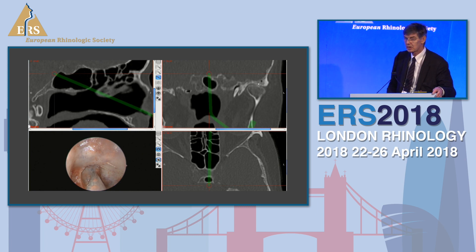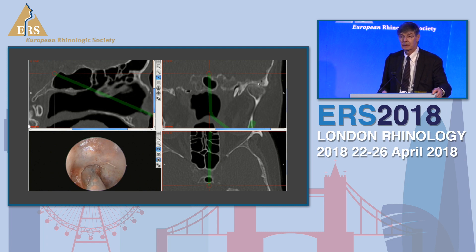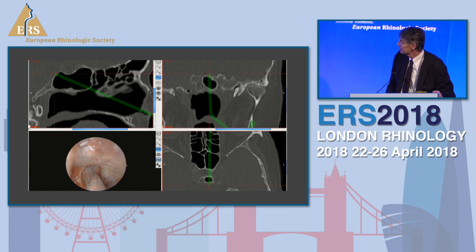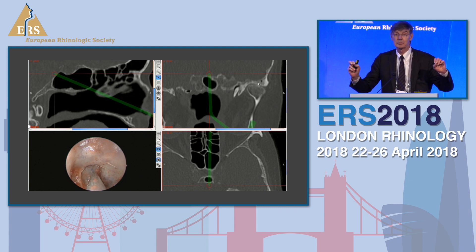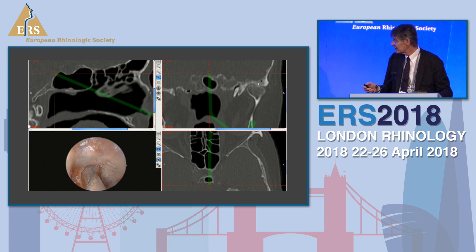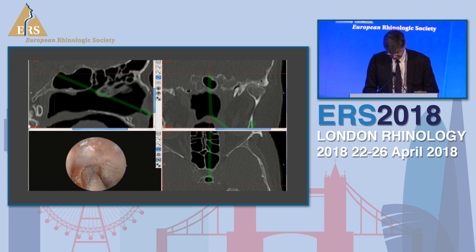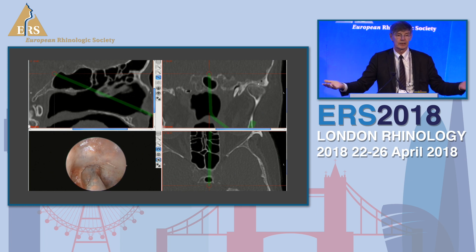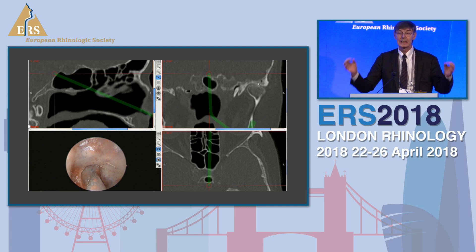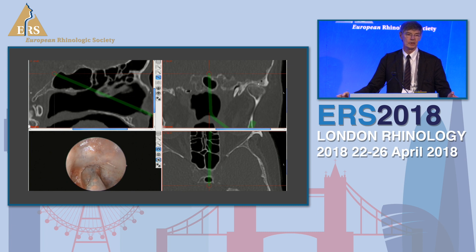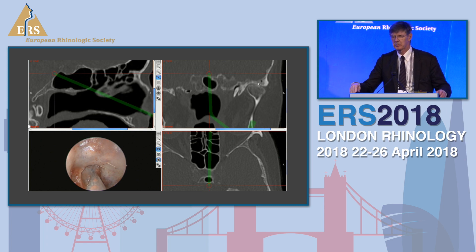One of the problems that most of you who work with navigation know is — and this applies to all systems — the deeper you go into the space, say posterior table, sphenoid, clivus, the system allegedly becomes inaccurate. You can see here that the tip of the instrument, the crosshairs, are clearly through the clivus — intracranially for about three millimeters — despite the endoscopic image clearly showing the tip of the tool is still in a safe confinement.